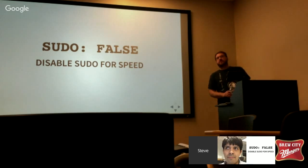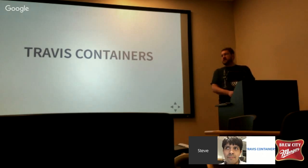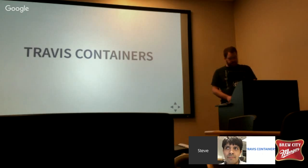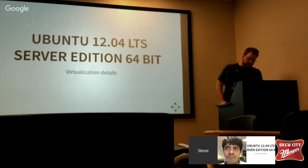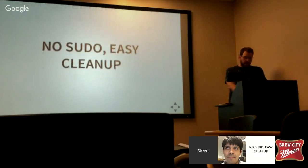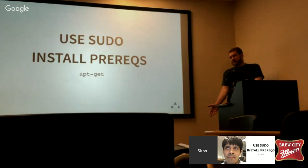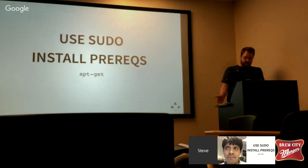There's a line called sudo:false. By default, Travis gives you basically a standard Ubuntu and allows you to do whatever you want with it. But if you disable sudo, you can get faster builds because they can use a container that doesn't have anything you don't need. Travis has containers and they can just spin one up. Since you don't have sudo access, they know you can't break anything. They use Ubuntu 12.04 server edition 64-bit.